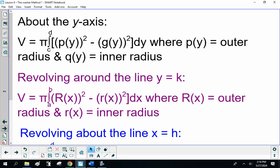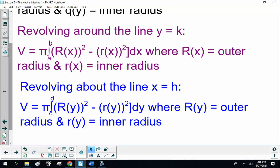Revolving around the line y = k, volume equals π from a to b of [R(x)² - r(x)²]dx, where R(x) is the outer radius and r(x) is the inner radius.